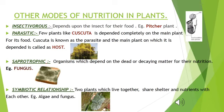Next is saprotrophic nutrition. Saprotrophs are organisms which depend upon dead or decaying matter for their nutrition, for example fungus. You can do an activity: take a bread, lightly moisten it with water and keep it in a cool place. After 2-3 days, you will see a green-like structure appearing on the surface of the bread — that is fungus, which takes its nutrients from the decaying matter, which is the bread. This type of nutrition is called saprotrophic nutrition.